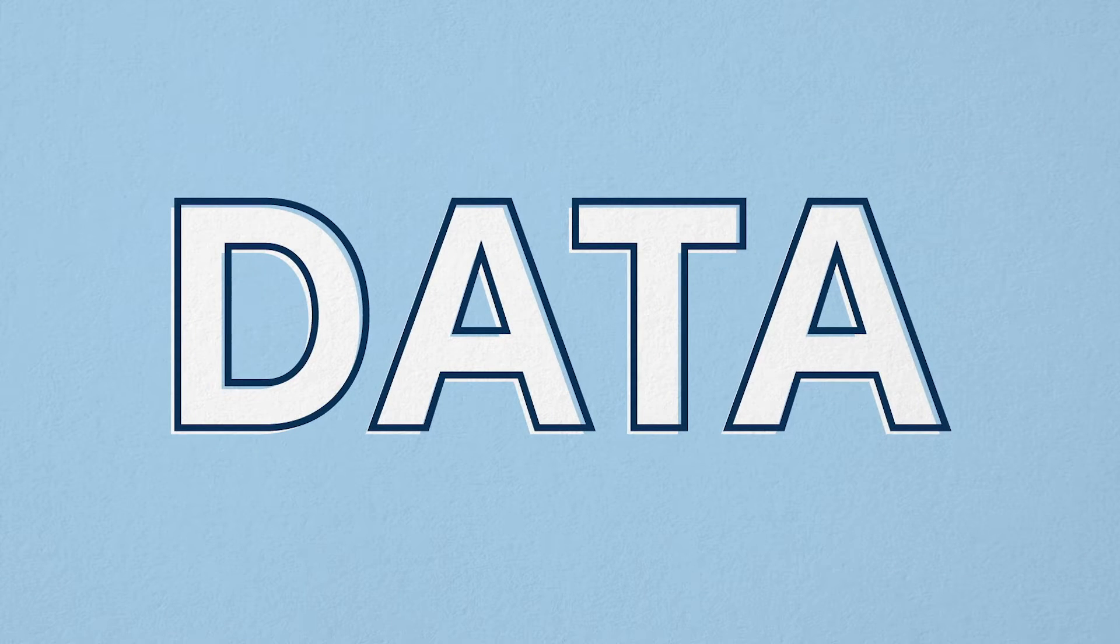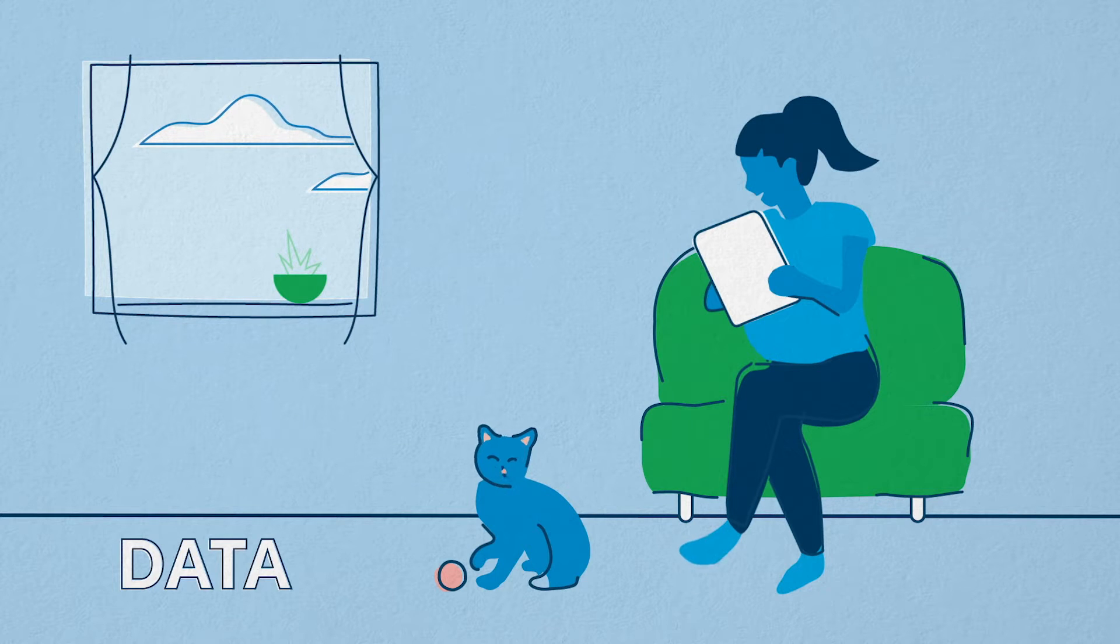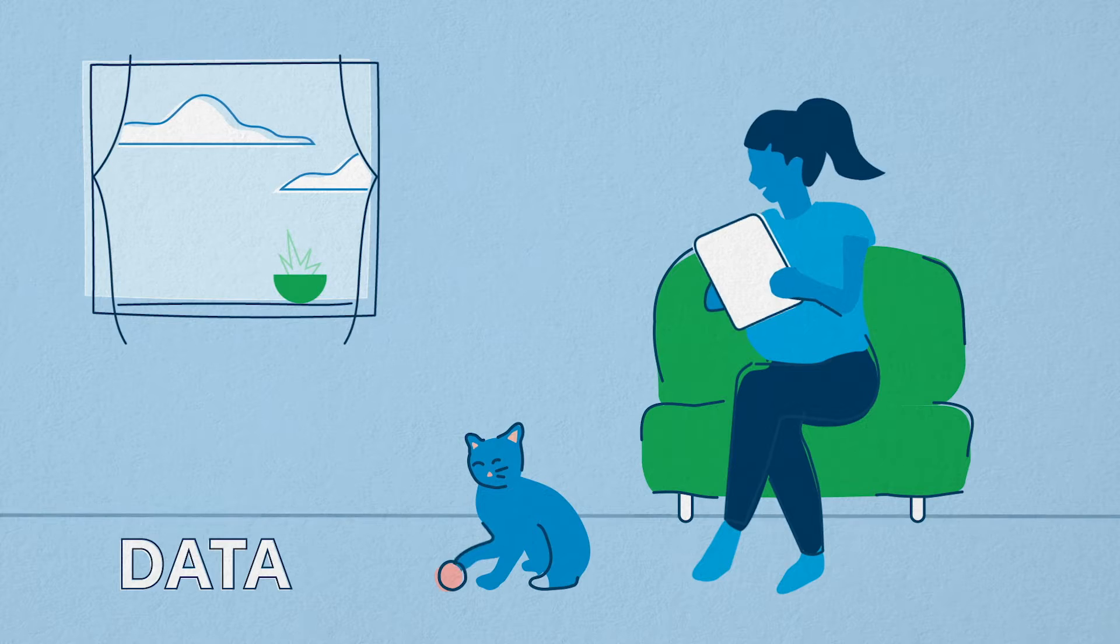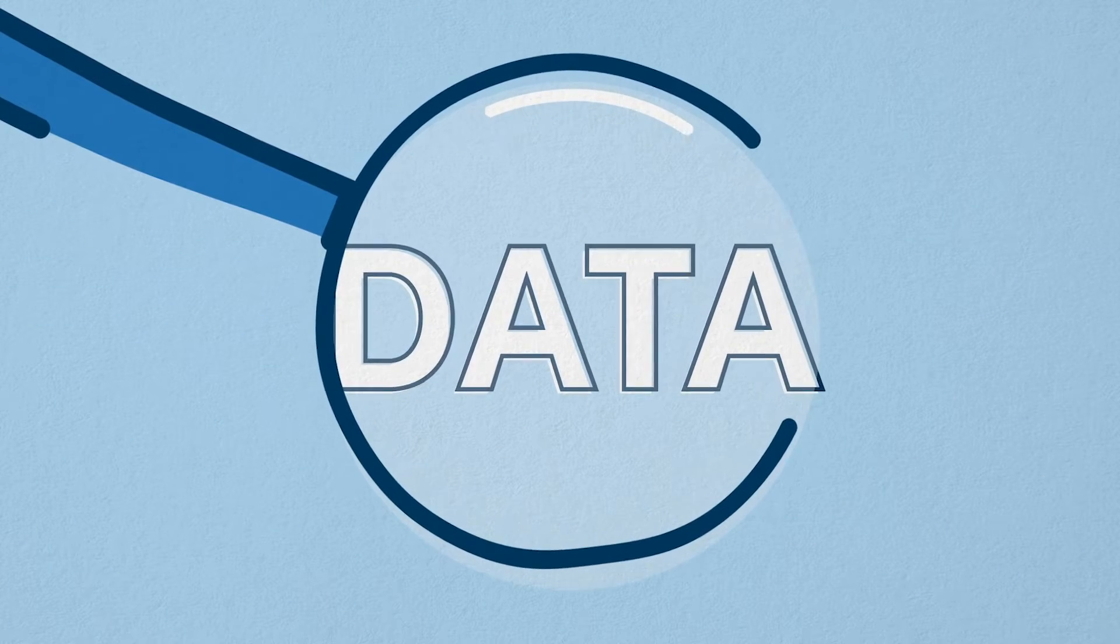While everyone else is talking about big data, at Highmark, we're focusing on data that's nice and small. Data that's super precise, laser-focused, blink and you miss it. Because when you get small, you can see things other insurers can't.